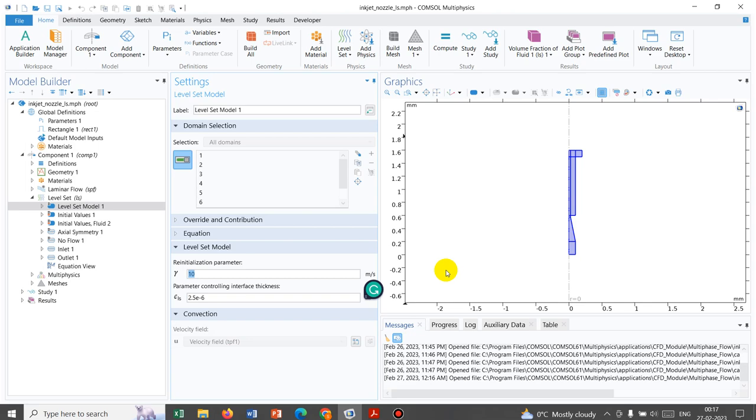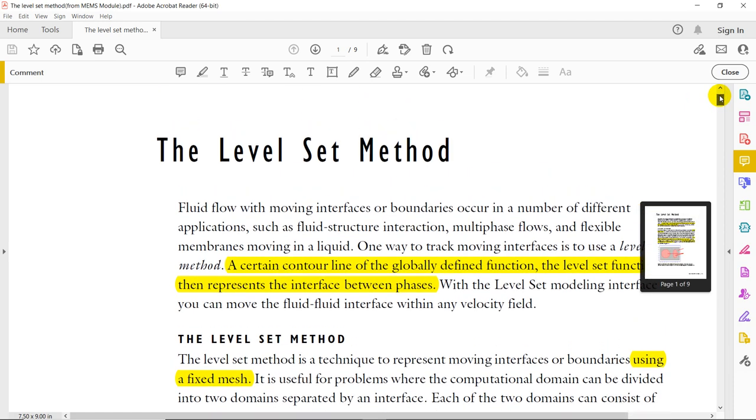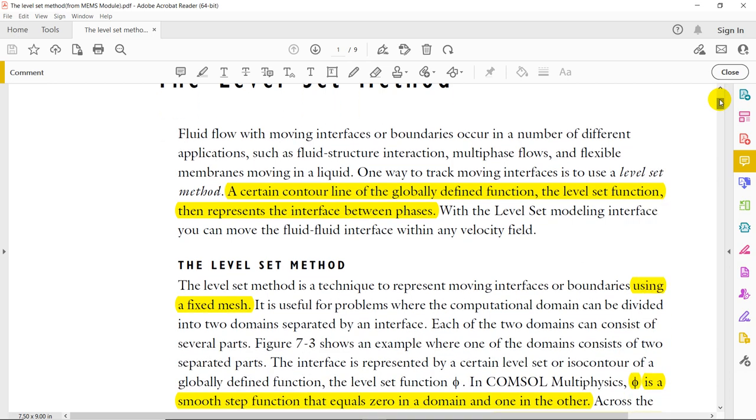Now, let us move to one file which is given by COMSOL itself. I will put this file in the description box so that you can have access to it or you can just search for the file on internet. Let us just read these few lines and it will be very much useful if I read it with you. So what they are saying, fluid flow with moving interfaces or boundaries occur in a number of different applications such as fluid structure interactions, multiphase flow and flexible membranes moving in a liquid. So, if you are working with any one of these phenomena, then you need this level set model to actually have your solution.